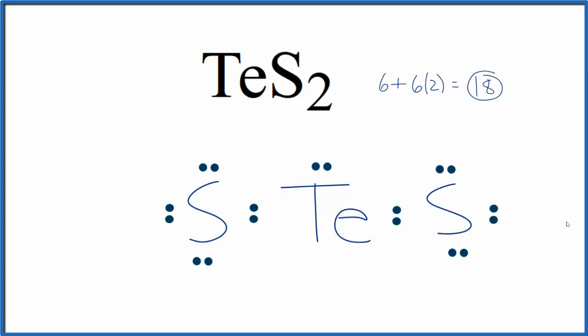Both sulfurs have octets, but the tellurium only has six valence electrons. So we could move a pair of electrons here, now this sulfur still has eight, but the Te has eight, this sulfur has eight, so this looks like a pretty good Lewis structure.